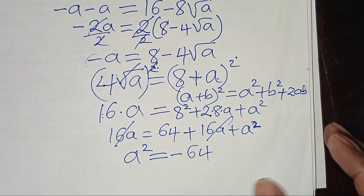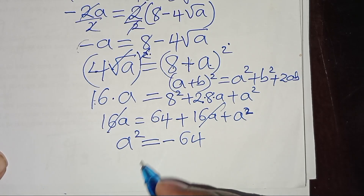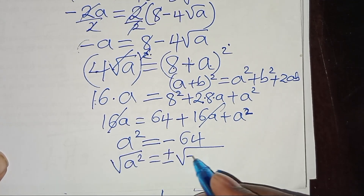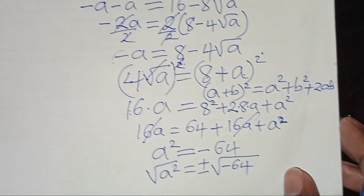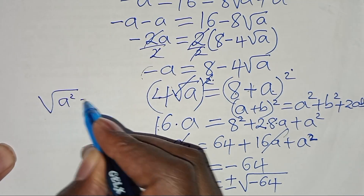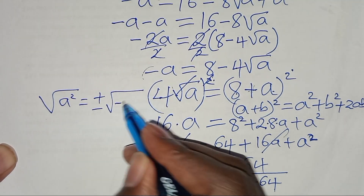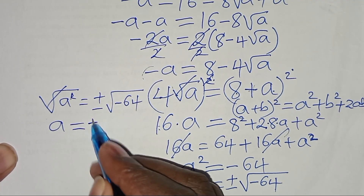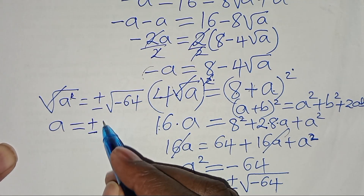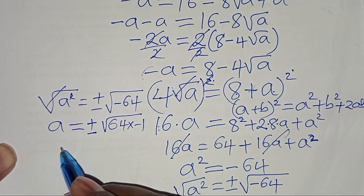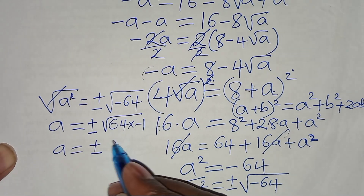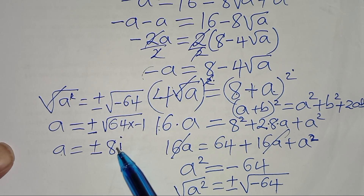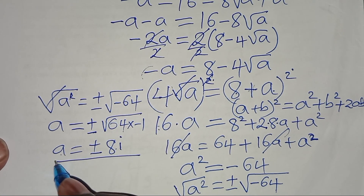Taking the square root of both sides: a = ±√(−64) = ±√(64 · (−1)) = ±8√(−1) = ±8i. So a = ±8i. Let's verify that both values satisfy the original equation.